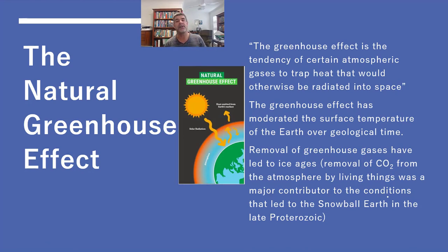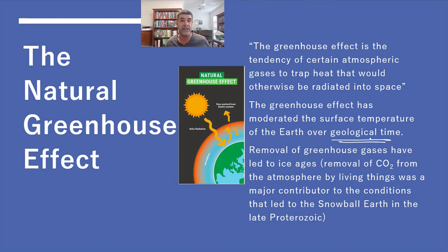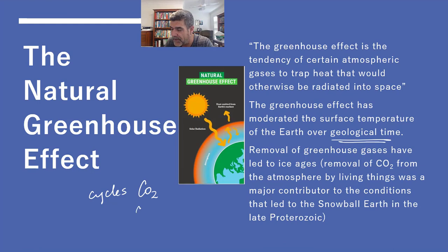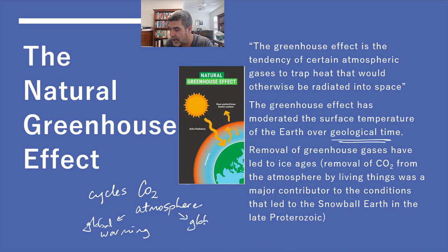The greenhouse effect has moderated the Earth's surface temperature over a long period of geological time. One of the things we need to do is think about the timescale of change, because it's true that there have been cycles — changes in the levels of carbon dioxide in the atmosphere over time — and that has led both to global warming and global cooling. We need to have a look at some of these natural cycles.